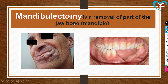Next is mandibulectomy — removal of part of the jaw bone (the lower mandible). If cancer has spread to the complete jaw, the complete jaw is removed; if it is partial spread, partial jaw is removed; if it is in one part, only that part is removed.